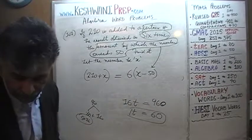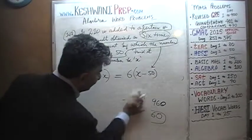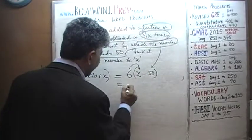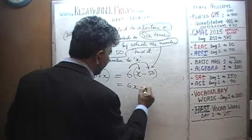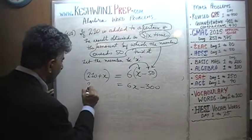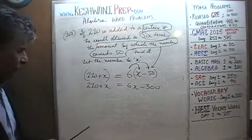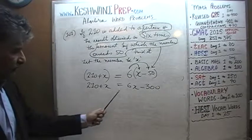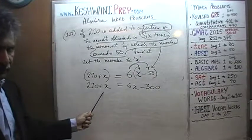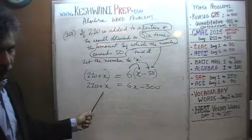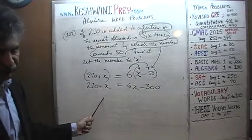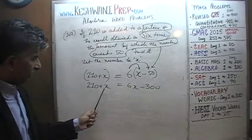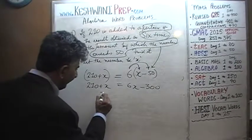The rest is very simple and straightforward. Open the parenthesis: 6 times x minus 6 times 50 gives us negative 300. So we have 210 plus x on the left. Instead of bringing 6x to the left-hand side — which would give a negative coefficient for x — let's bring x to the right-hand side by subtracting x from both sides.